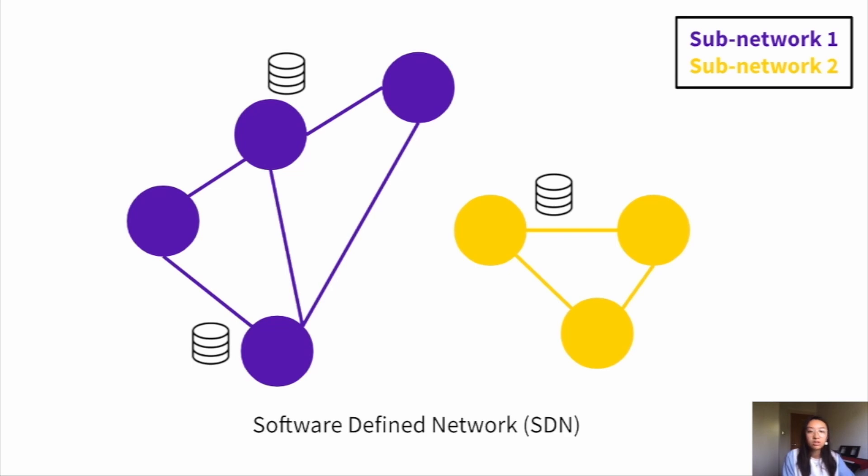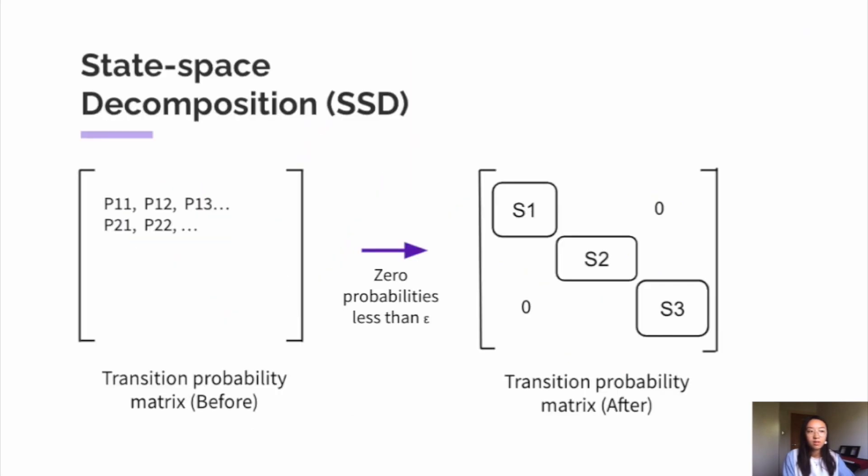And to our knowledge, there is currently no other method which exploits this property in order to speed up training. So now let's dive into our new approach. We define state space decomposition as a method to split up state space into disjoint regions. And we can visualize this concept by observing the transition probability matrix of an RL problem.